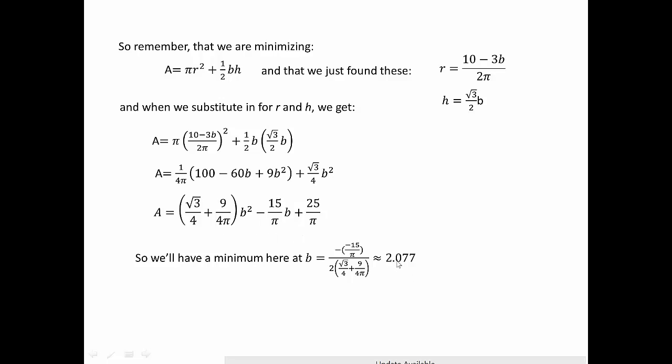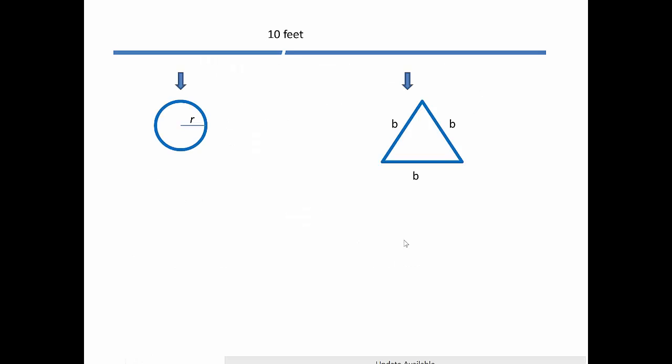Go back to the picture. What we just found is that the minimum happens when b is approximately 2.077. This length is 3b, so that's 6.23, and the whole thing is 10, so this length is 10 - 6.23, about 3.77. That's how we have to cut the rope in order to minimize the total area: 3.77 feet goes to the circle and 6.23 goes to the triangle.